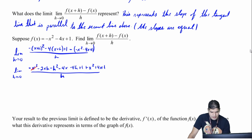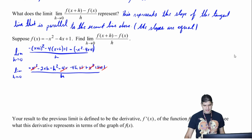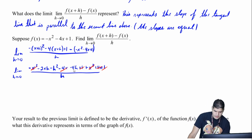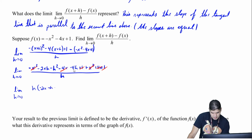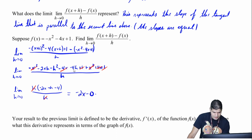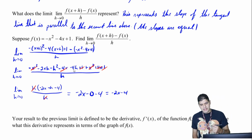Let's keep going. Taking the limit as h approaches zero, I expand and distribute the negative to get negative x squared minus two xh minus h squared minus four x minus four h plus one, plus x squared plus four x minus one, all over h. The negative x squared and positive x squared cancel, the four x terms cancel, and the ones cancel. Everything left — negative two xh minus h squared minus four h — has an h in common, so I factor that out: h times the quantity negative two x minus h minus four, all over h. The h's divide out, and substituting zero gives negative two x minus four.